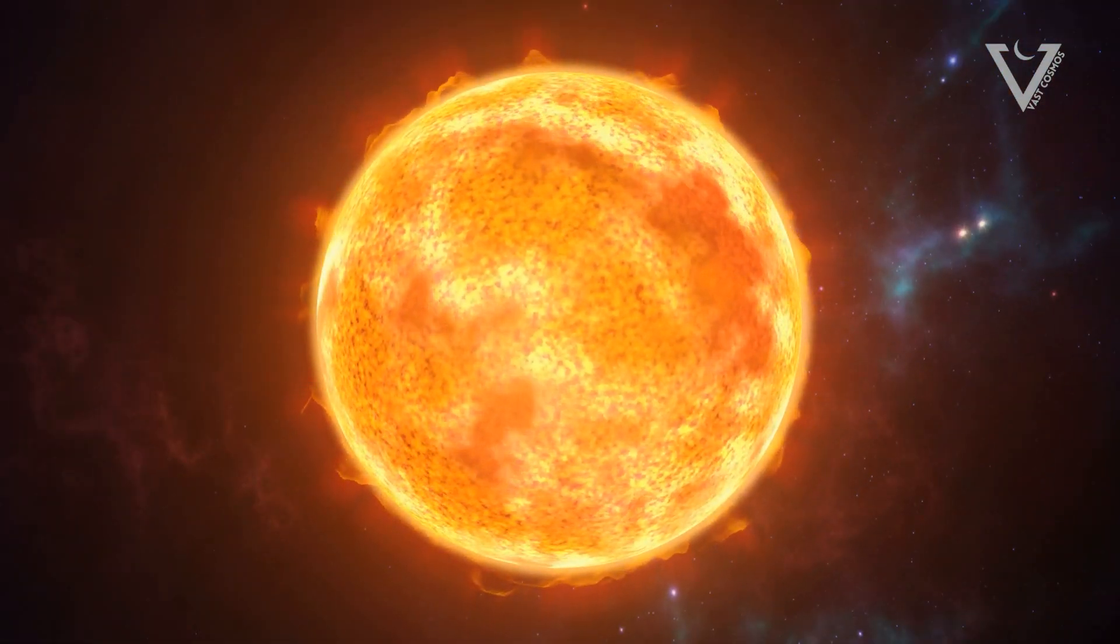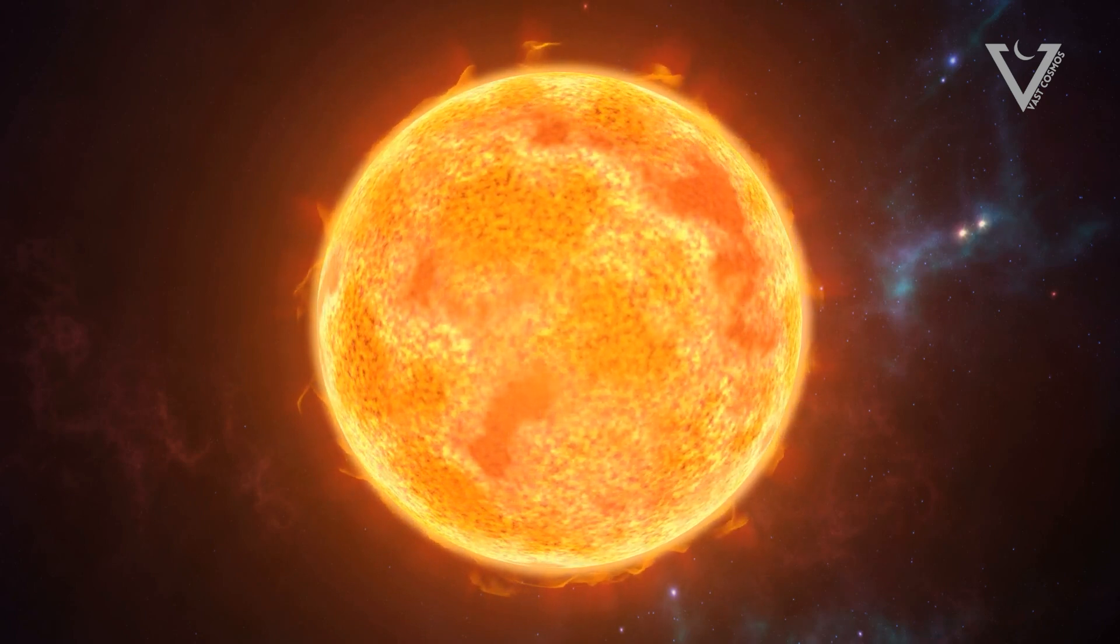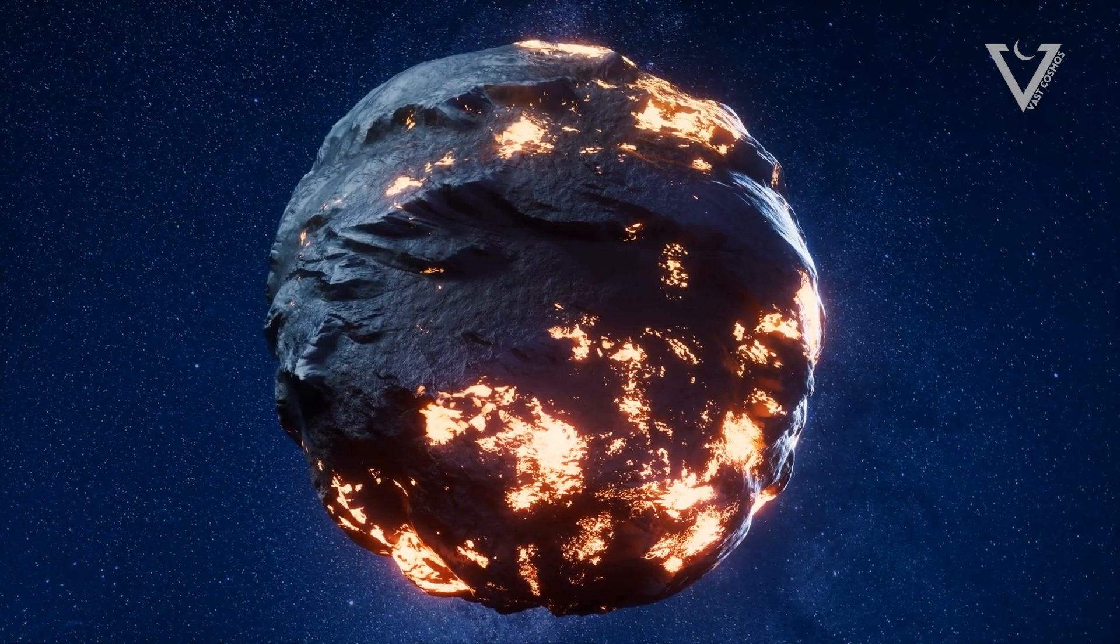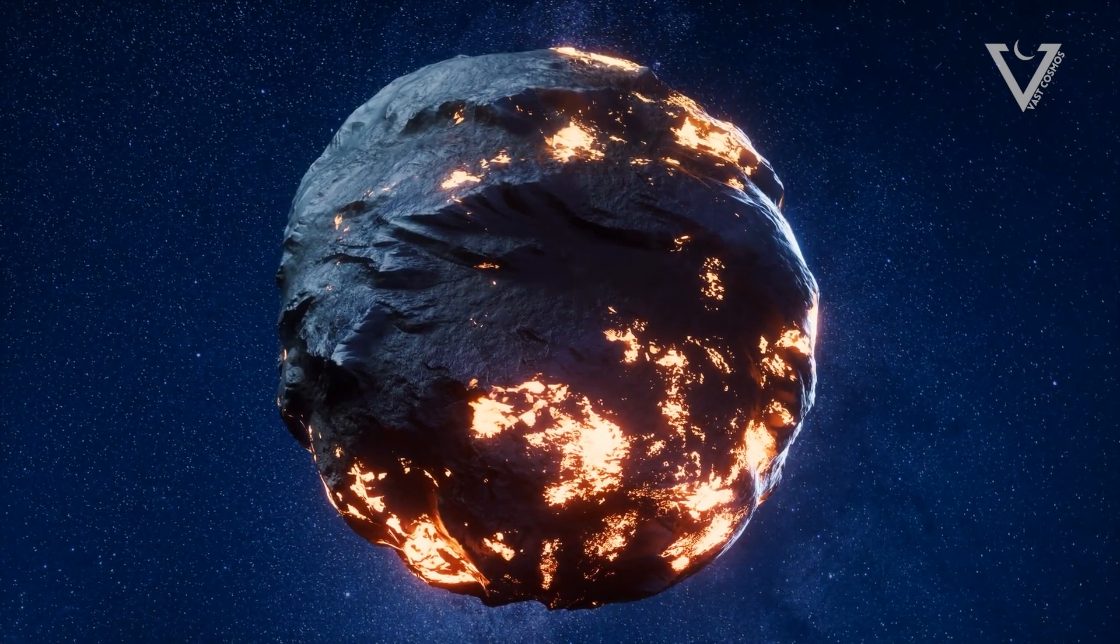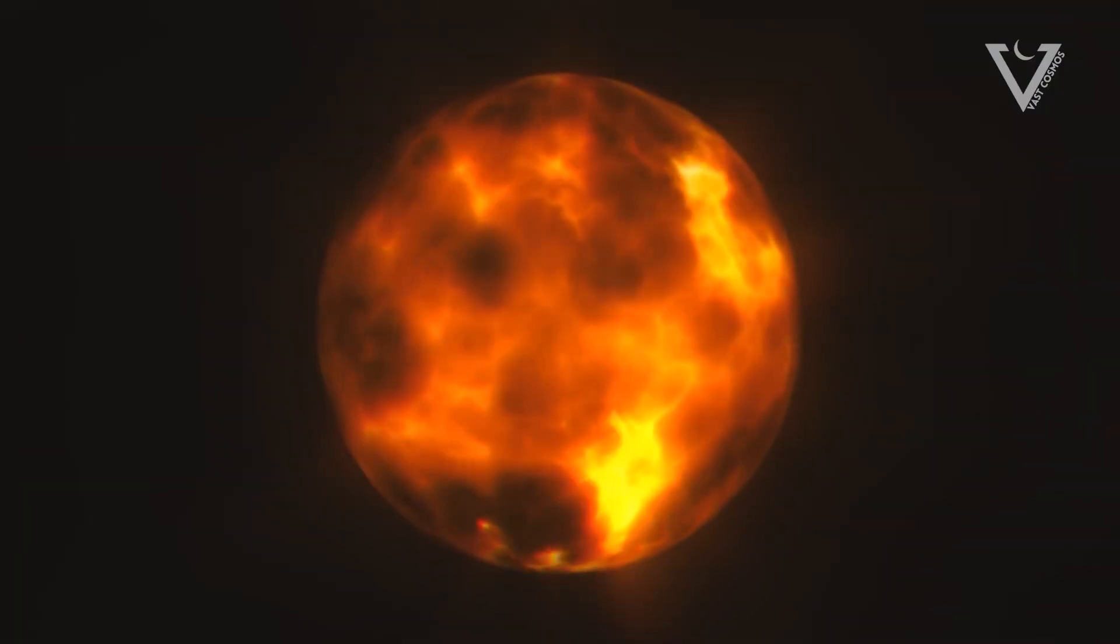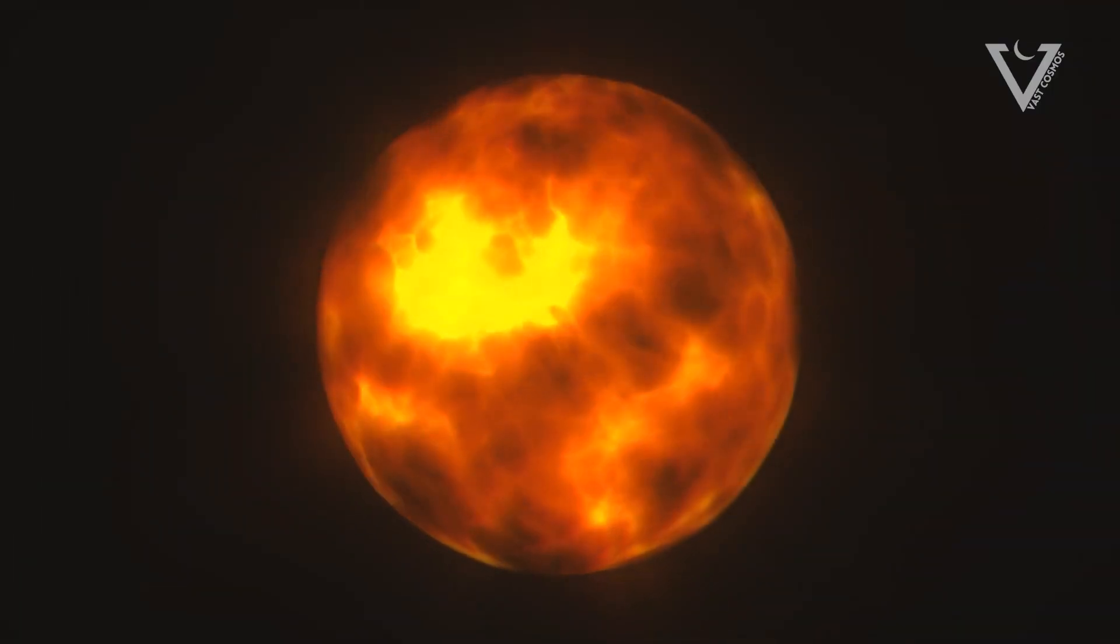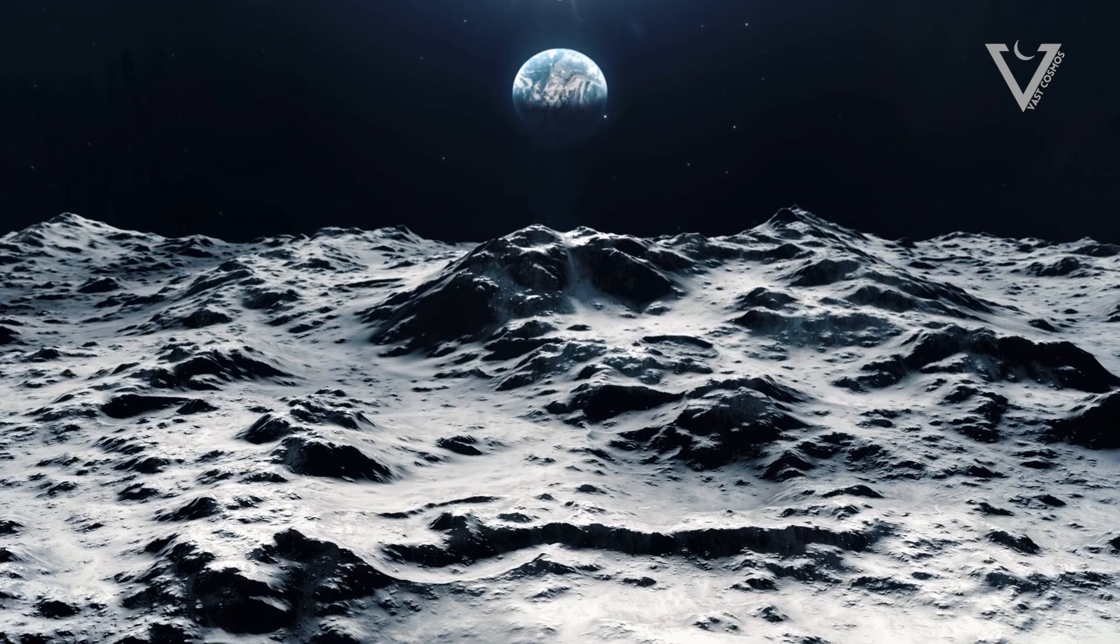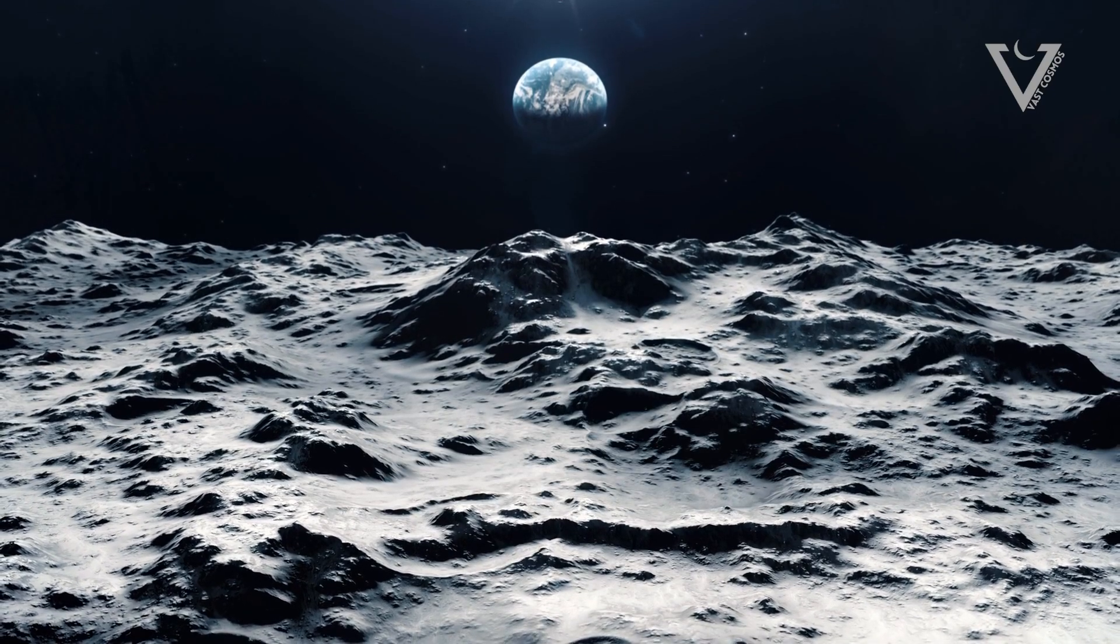The vaporized rock then ascends to the upper atmosphere, undergoing condensation and transforming into fine gravel, creating a literal rock rain during colder fronts. The planet's predicament is exacerbated by its locked position, with one side perpetually facing the blazing star and the other side plunged into frigid temperatures as low as negative 390 degrees Fahrenheit.